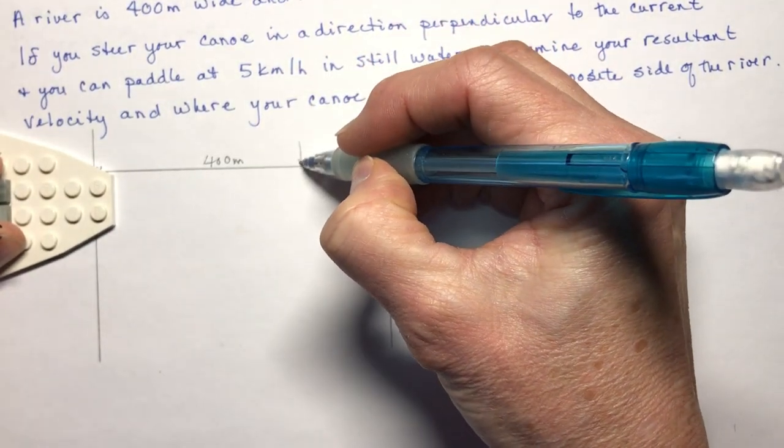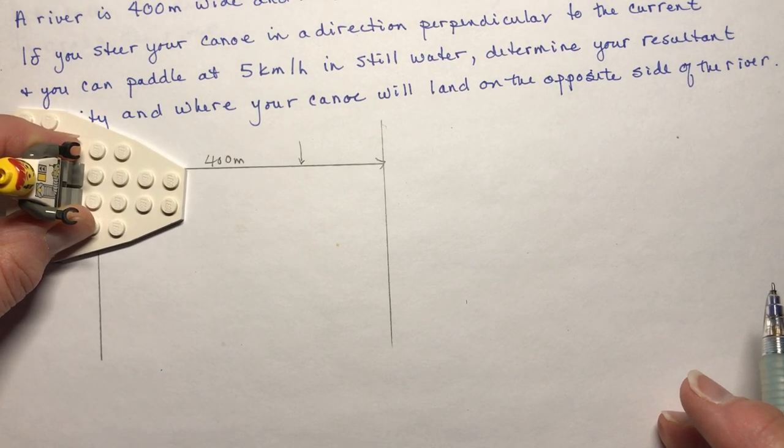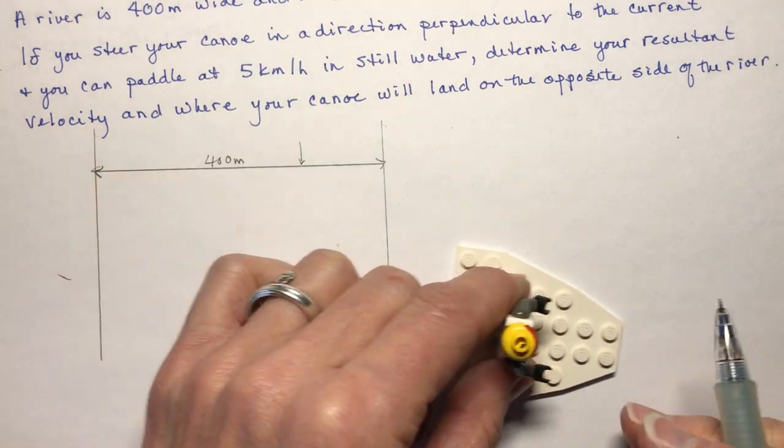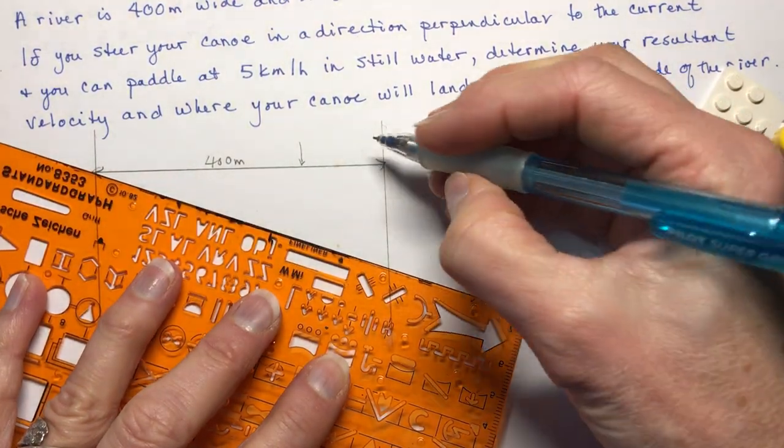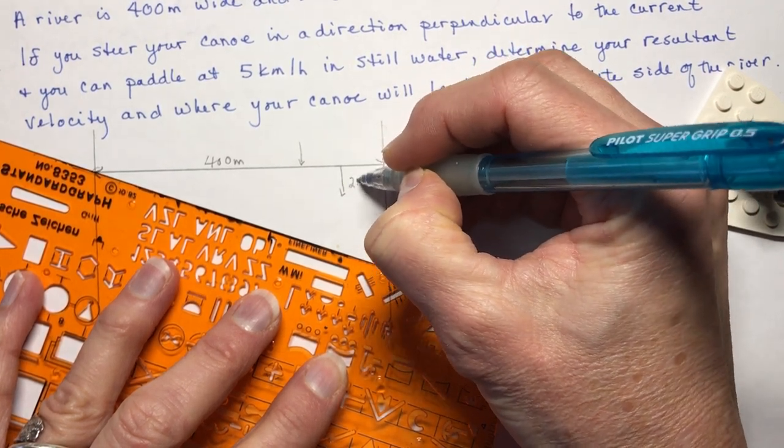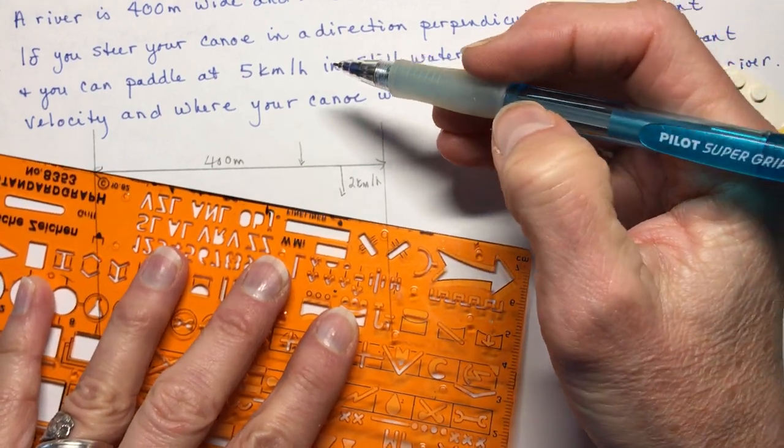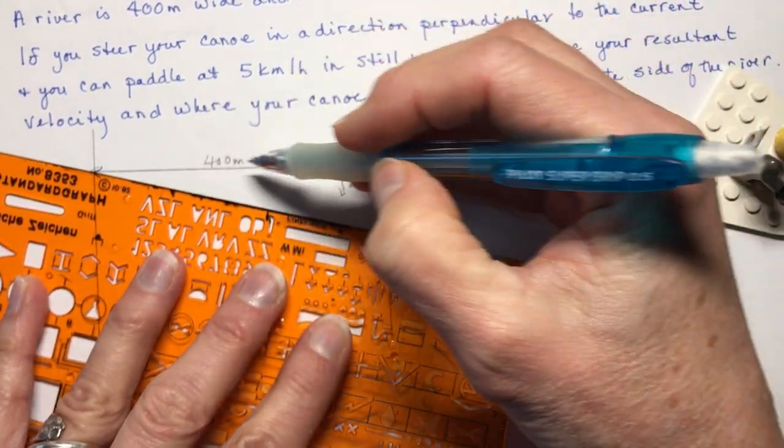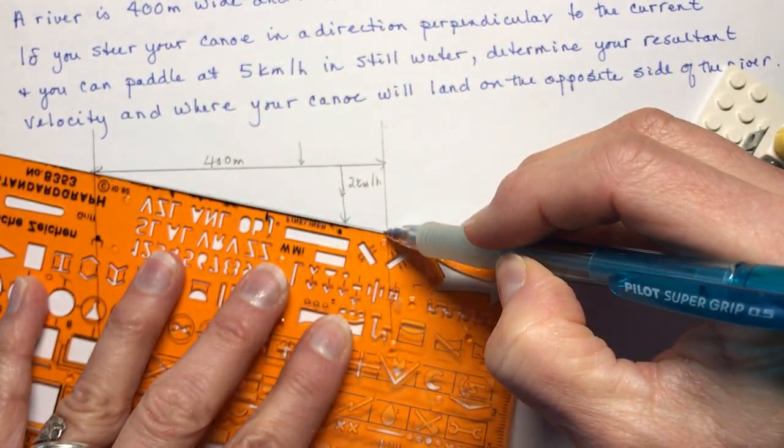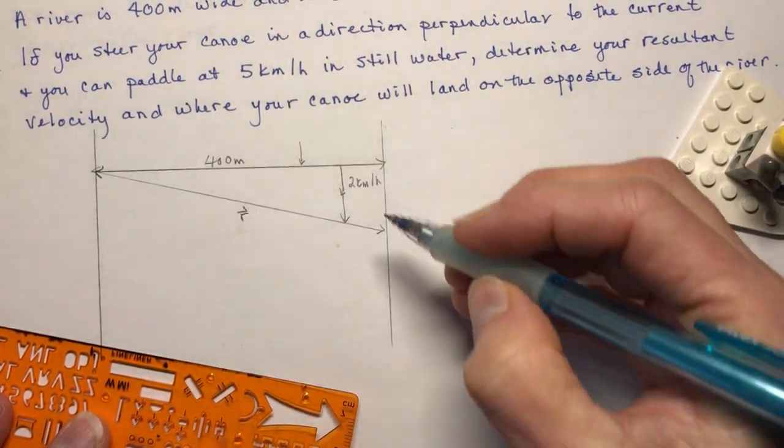So the current is going this way, right? So perpendicular to it is straight across. And you can paddle five kilometers an hour in still water. Determine your resultant. So obviously, as you're going across, this current that's going this way at two kilometers per hour is going to blow you this way. So it's really five to two. So this is my resultant here, my resultant vector.